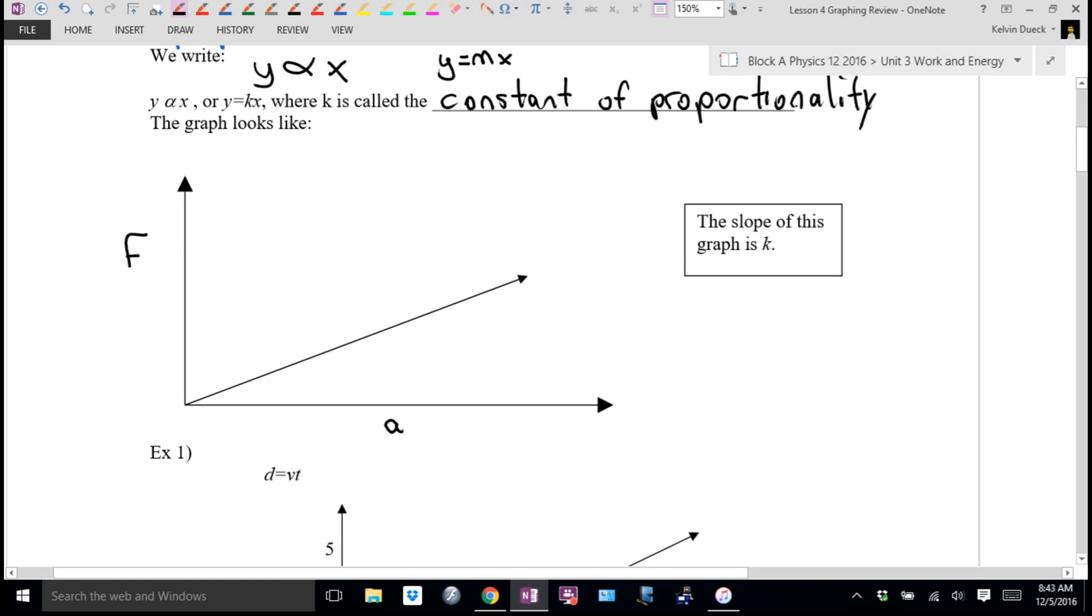Force and acceleration. What would the slope of this graph be? What fits in an equation where I have F equals something A, what would sit there? The slope of this graph would tell you the mass of the object if you actually had numbers and went rise over run. Or if I gave you a graph of force versus mass, the slope would tell you the acceleration.